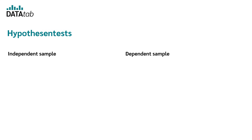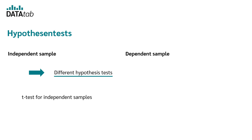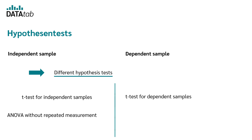Depending on whether your data comes from a dependent or an independent sample, you need to use different hypothesis tests. If your data are independent, for example, an independent samples t-test or an analysis of variance without repeated measures is used. If your data are dependent, for example, a t-test for dependent samples or an analysis of variance with repeated measures is used.